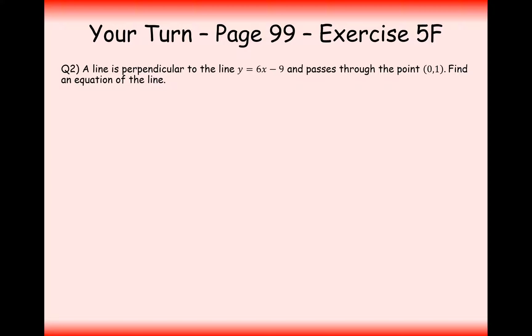Well done for pausing the video and having a go at this question here. So if the line is perpendicular to y equals 6x minus 9 and passes through the coordinate 0, 1, find the equation of the line.